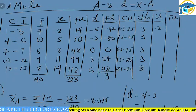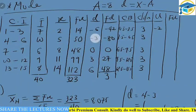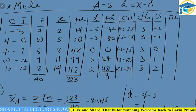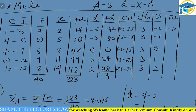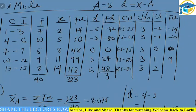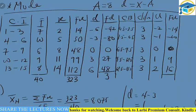Continuing: negative 3 divided by 3 gives negative 1; 0 divided by 3 gives 0; 3 divided by 3 gives 1; and 6 divided by 3 gives 2. Now we multiply each mu value by the frequency. So 7 × (−2) = −14; 10 × (−1) = −10; 6 × 0 = 0; 9 × 1 = 9; and 8 × 2 = 16.